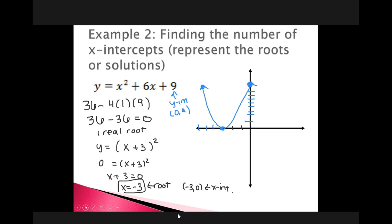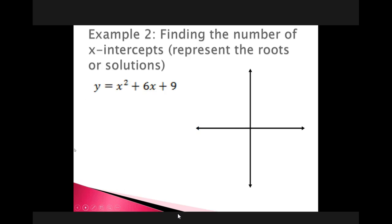The discriminant is important — it tells me the number and types of solutions for a quadratic. Tomorrow when we look at the quadratic formula, it will actually give me the values of the roots. The next page in the packet is all about applying the discriminant: finding its value, describing what that value represents, and using it to determine the number and types of solutions. You have about 15 minutes to get started on that.